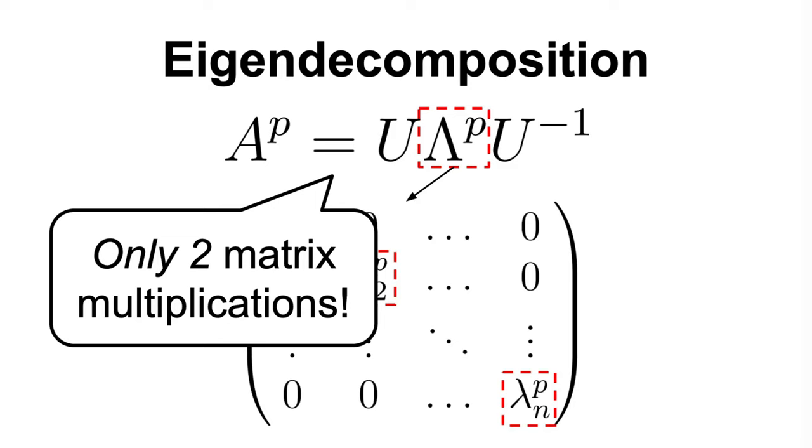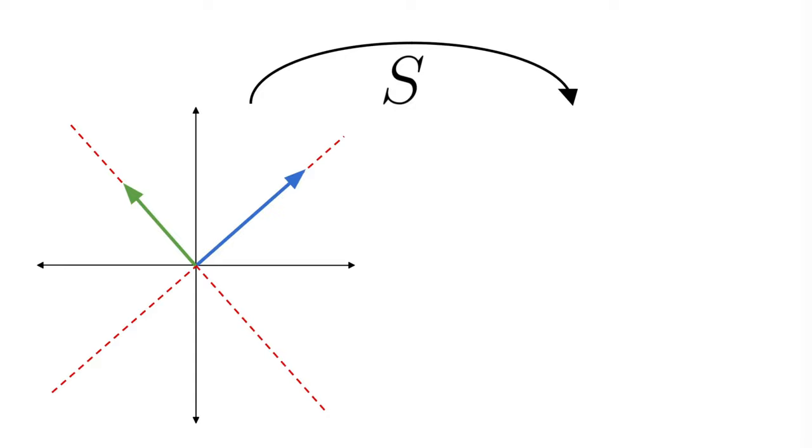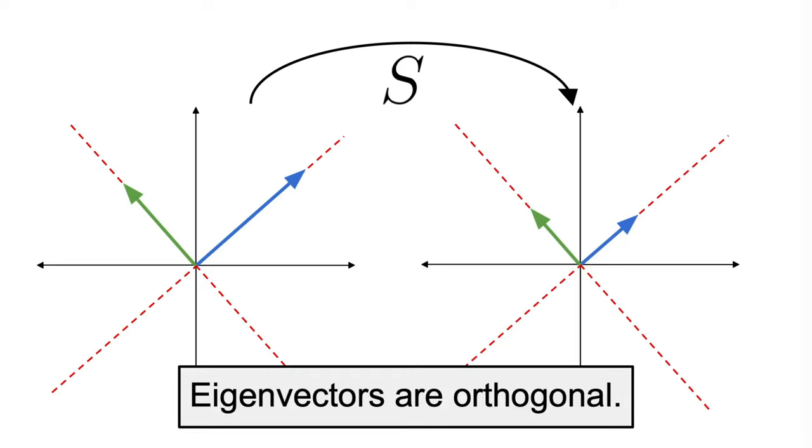Finally, before ending this video, I would like to talk about a very special case of eigendecomposition, and that's when our input matrix is a symmetric matrix. What happens in this case is that our normalized eigenvectors are orthonormal, so when we put them in a matrix, we get an orthogonal matrix.